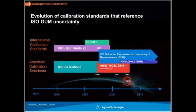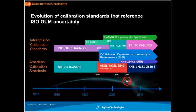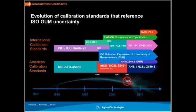Looking at the standards appearing in this chart — and we'll go into more detail next time — the key point is that today, whether you're looking at ISO 17025, ILAC G8, or any current standards, every single one of them references the ISO guide for expression of uncertainty and measurement. Every single one.